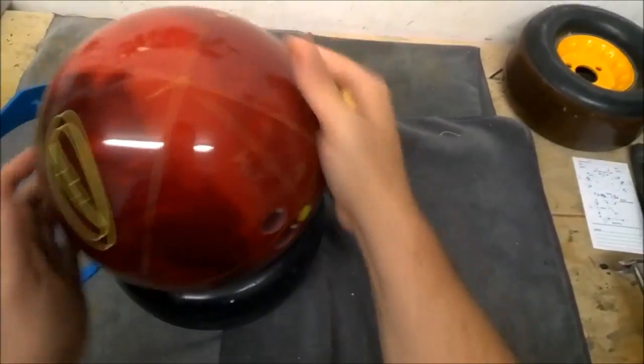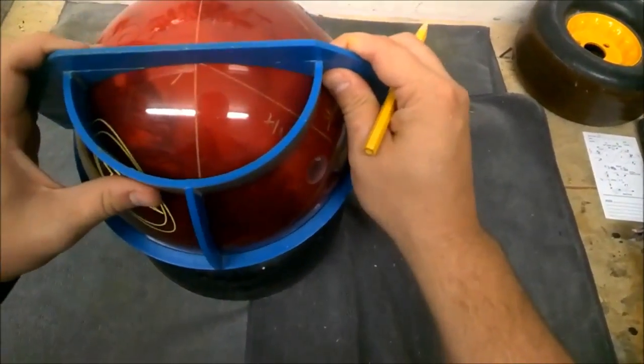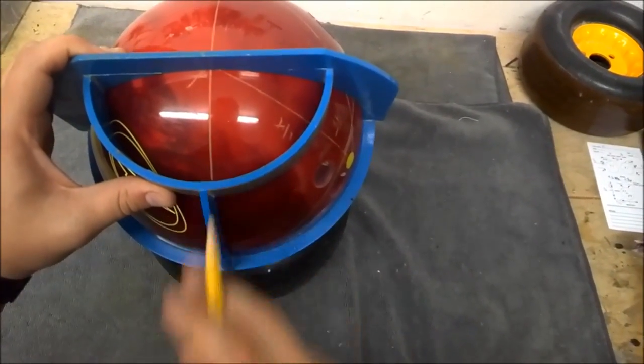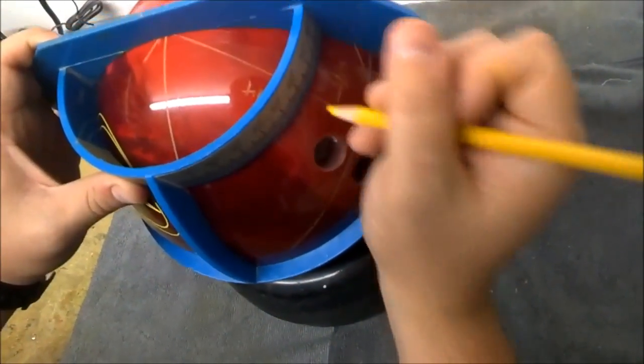Then you want to flip the ball around to where the PAP is up. Put the notch on the ProSect on the PAP, in the rib, on the VAL and then we're going to mark this angle. So, it comes to 60.